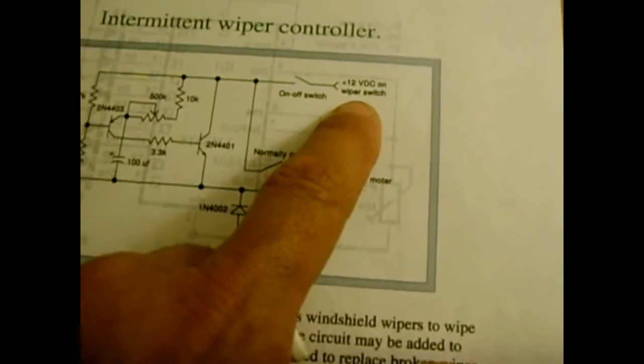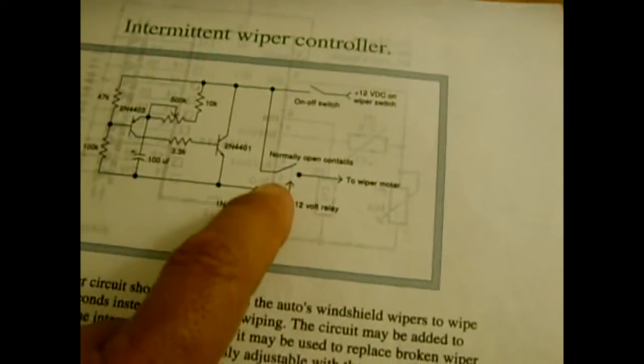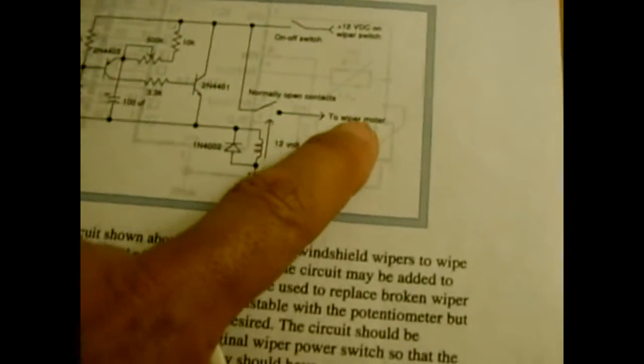And how it's going to work. The wiper switch feeds power into the circuit. And then it will trigger the relay to close the contacts to supply power to the wiper motor.